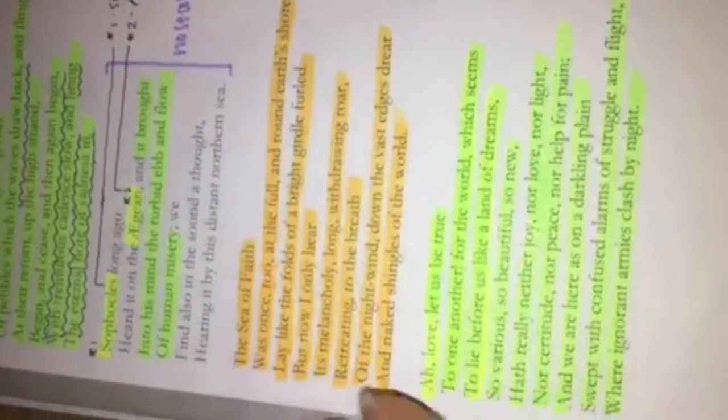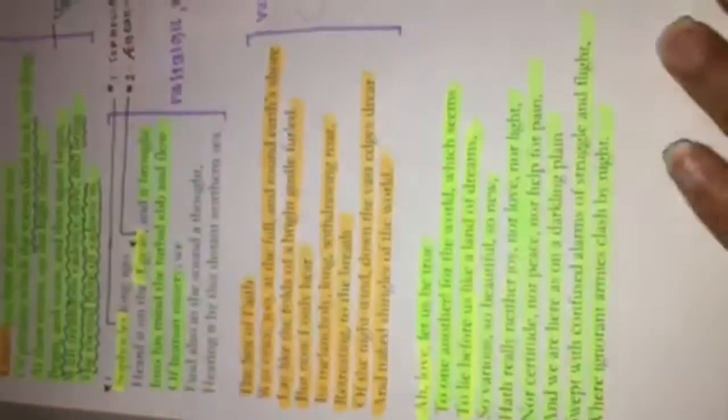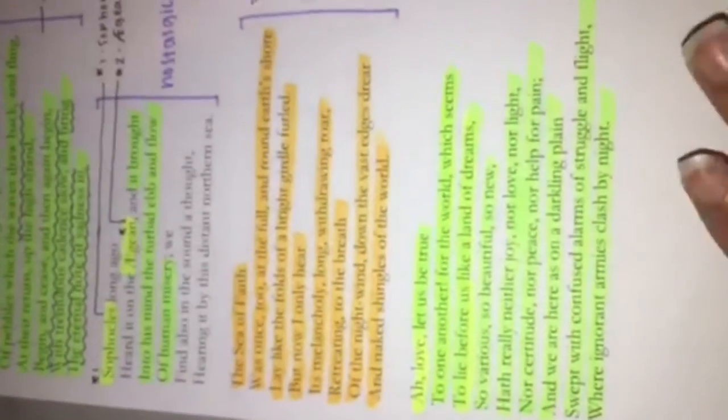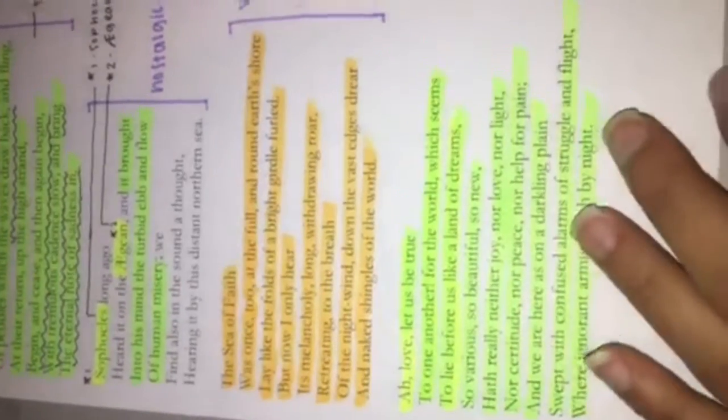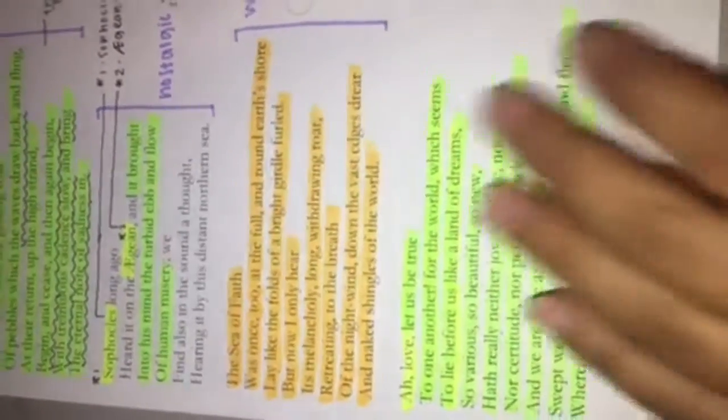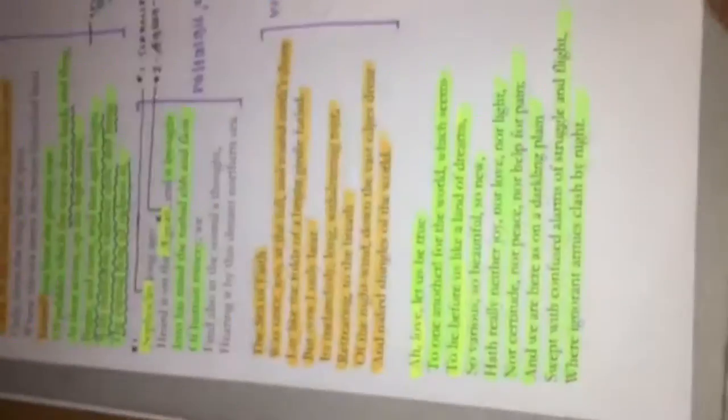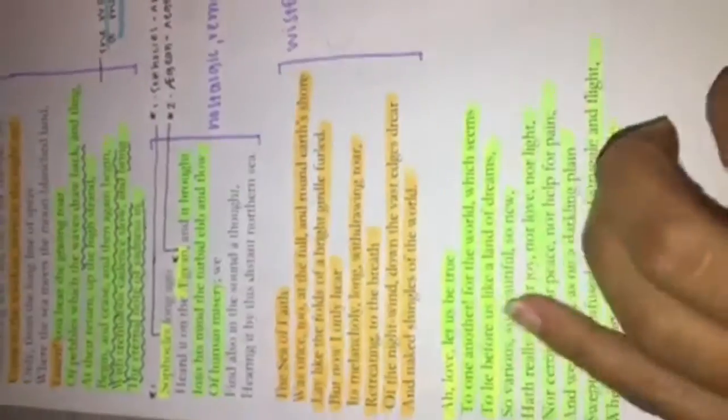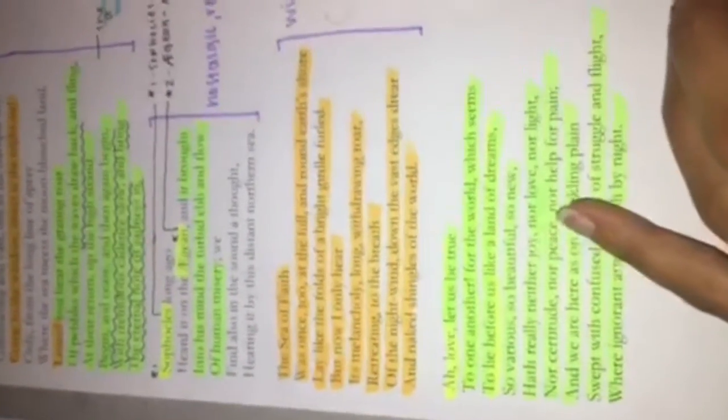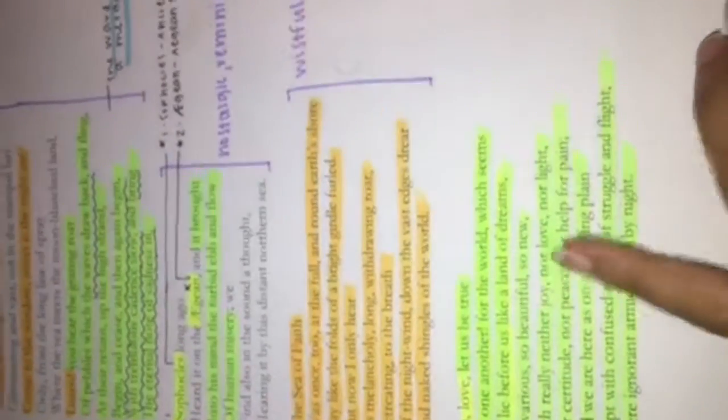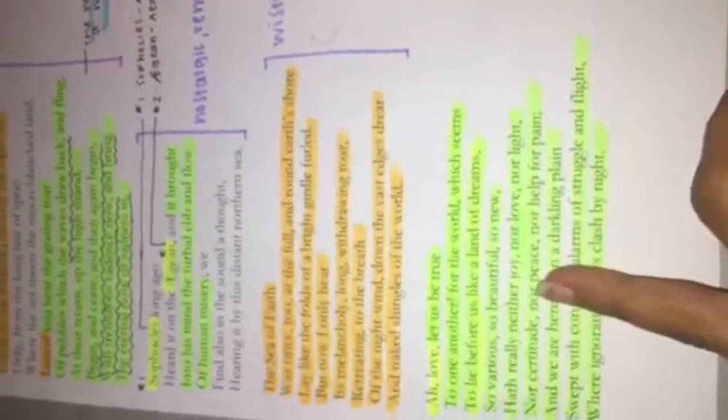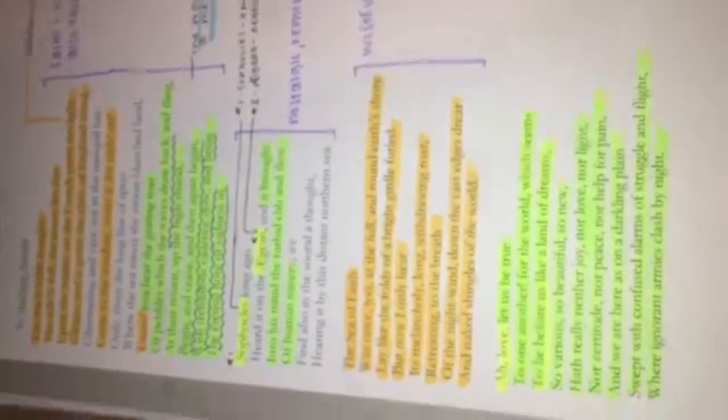And this last one is just kind of a plea and kind of a negative take on how the world works and how it's so various and so beautiful and so new, and this kind of tone is also a little bit ambivalent, because it says how the world is so various, so beautiful, and so new, but it doesn't have joy, love, or light, or peace, or any help for pain, so it's kind of ambivalent, shows very various emotions towards the world and what it is to him.